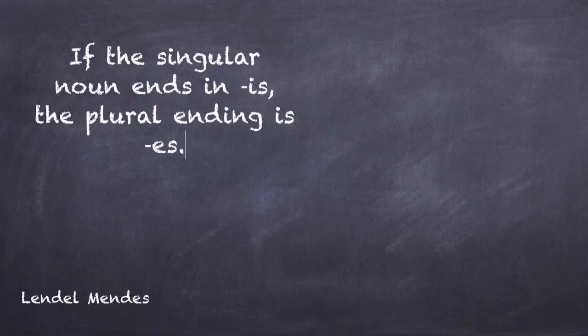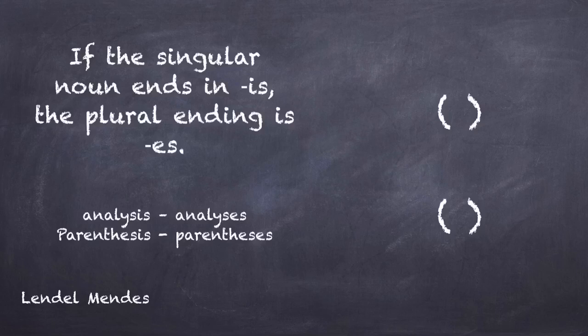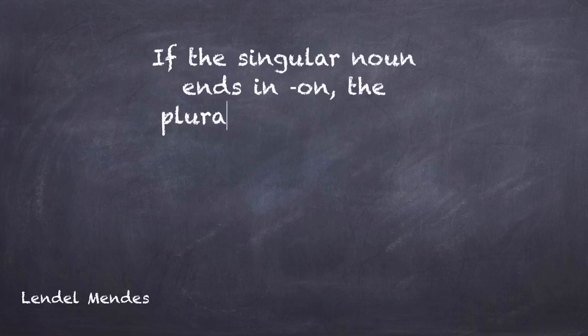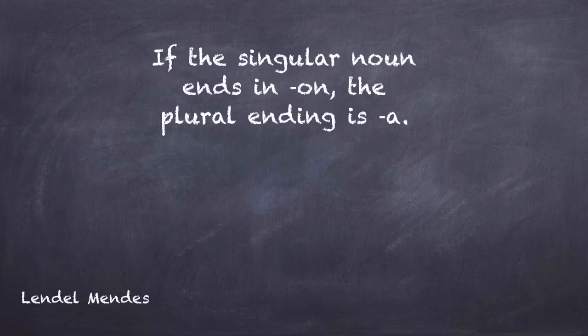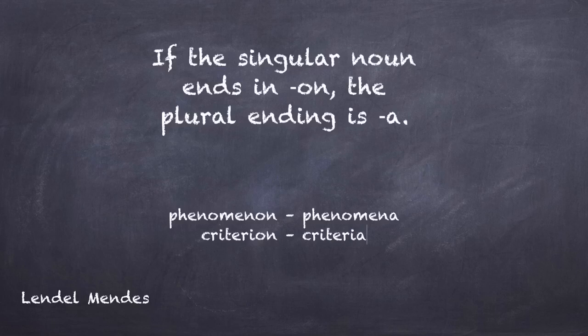If the singular noun ends in IS, the plural ending is ES. If the singular noun ends in ON, the plural ending is A. Example: phenomenon, phenomena, criterion, criteria.